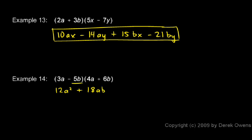Then the inner terms, negative 5b and 4a is negative 20ba, but I'll write it as negative 20ab. And then we have negative 5b times 6b, which is negative 30b squared.